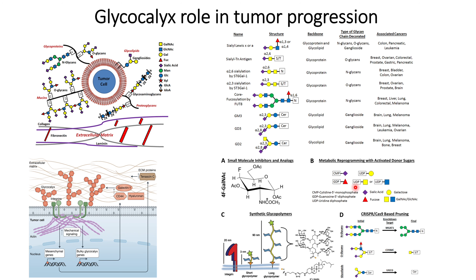There are four approaches to inhibit this process. First, small molecule inhibitors disrupt the glycocalyx thickness so that integrins can interact with the immune system and non-self epitopes can be recognized by immune cells. Second, metabolic reprogramming with activated sugar donors — these donors enter tumor cells and disrupt the glycosyltransferases responsible for glycosylation, reducing the bulky glycocalyx thickness.